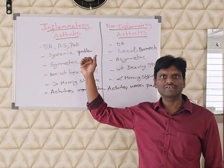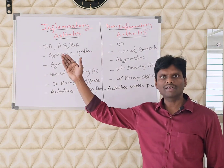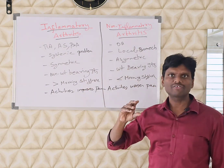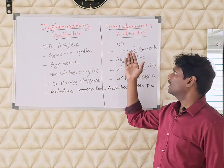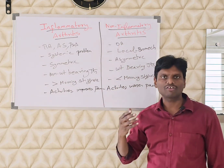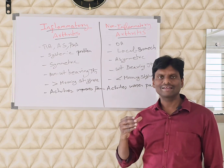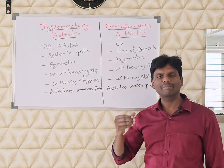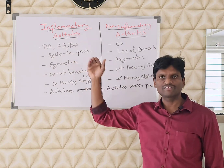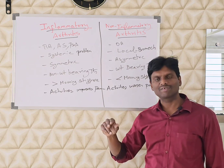In inflammatory arthritis, conditions like rheumatoid arthritis, ankylosing spondylitis, and psoriatic arthritis all come under the inflammatory joint pain category. Whereas the non-inflammatory, otherwise called mechanical type of arthritis, affects the weight-bearing joints — for example, osteoarthritis of the hip joint and osteoarthritis of the knee joint. These are classic examples of non-inflammatory mechanical arthritis. Inflammatory arthritis is a systemic problem which causes secondary inflammation in the joint.